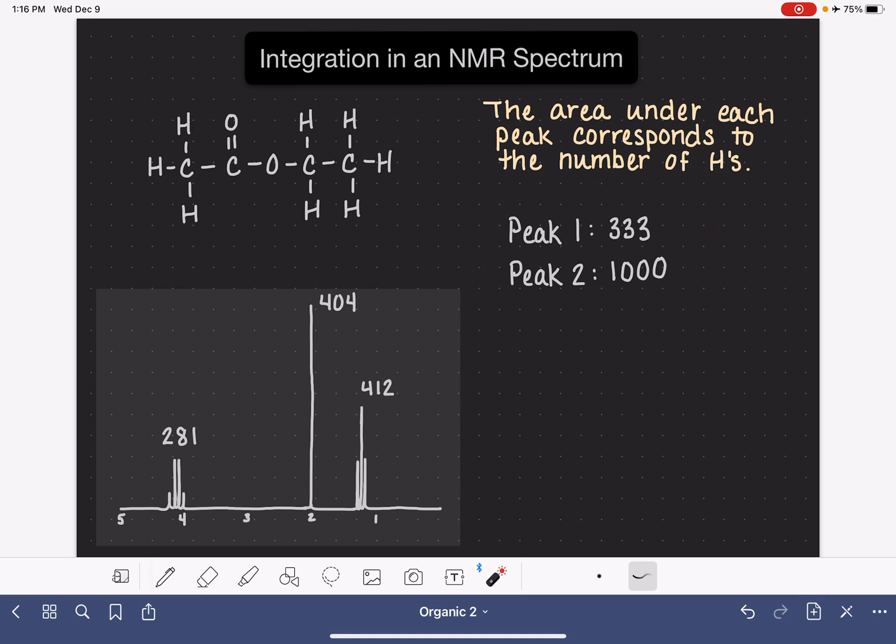Let's analyze these integrals. The first thing I want to point out is that the integrals only correspond to the number of hydrogen atoms. They are not equal to the number of hydrogen atoms. So this is not saying that peak number two is coming from 1000 hydrogens. These numbers just simply represent the area under the peak in units that we don't know. Our job is to recognize that these integrals represent the relative ratio of the hydrogen atoms in each peak, and turn this ratio into numbers that are more reasonable for the number of hydrogen atoms we would expect in a molecule.